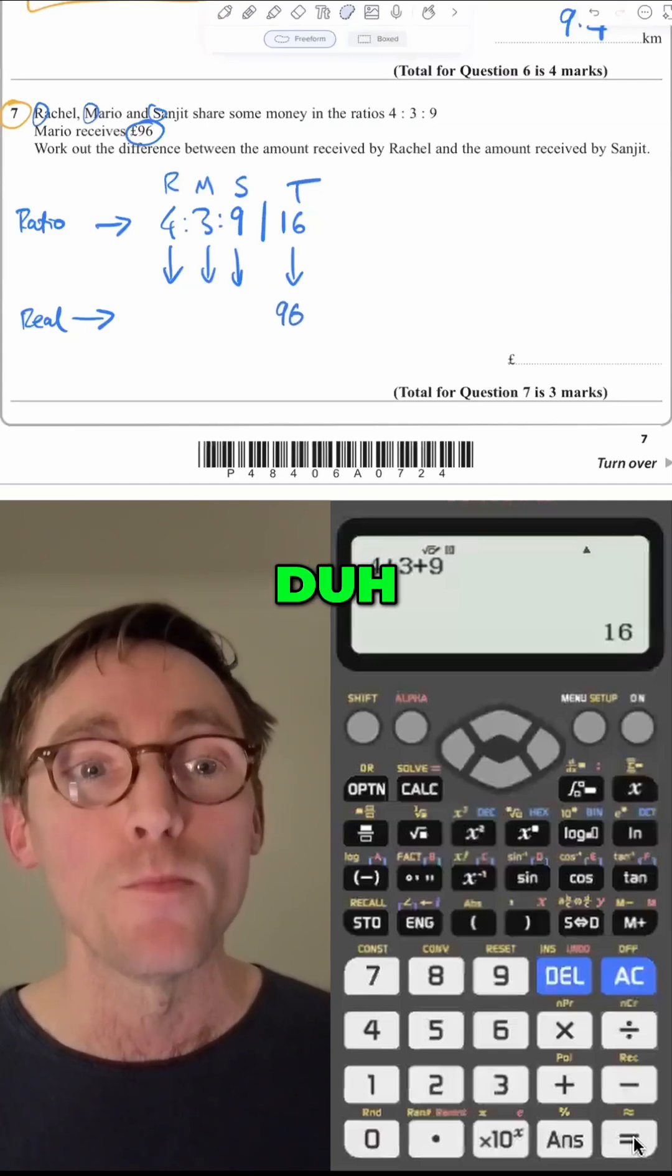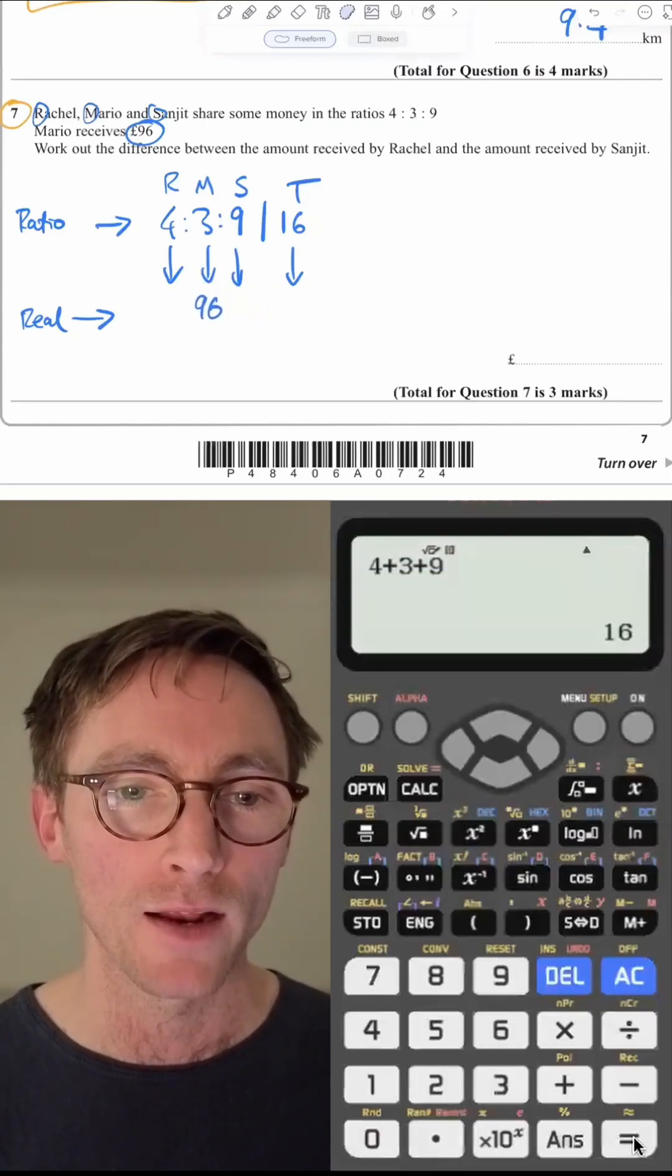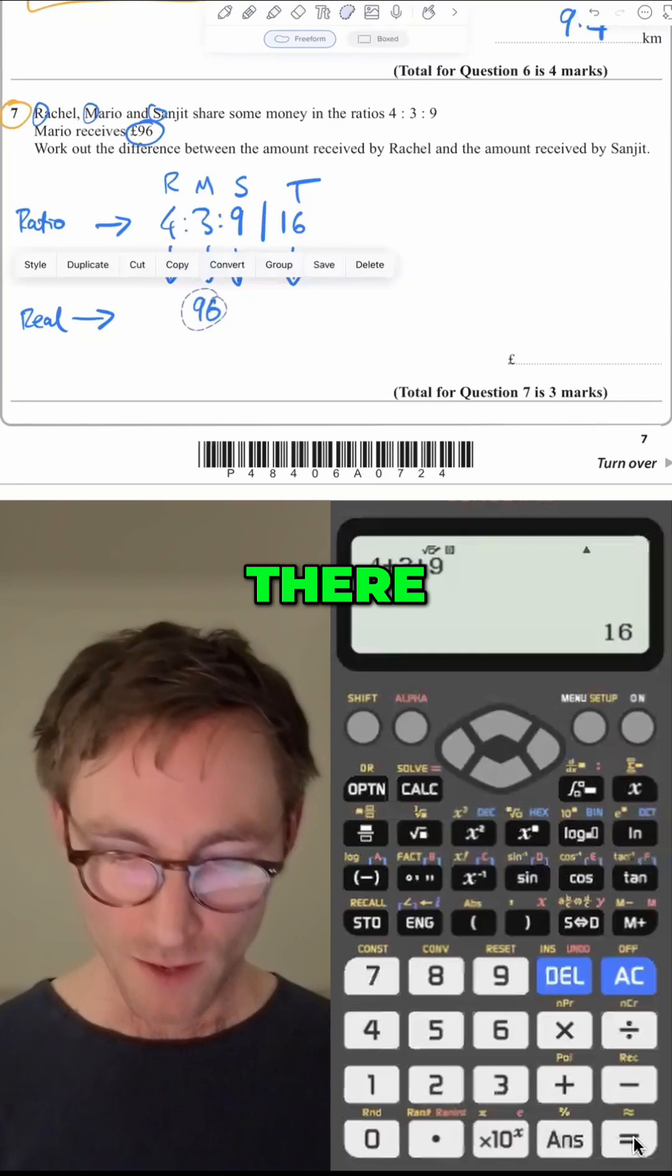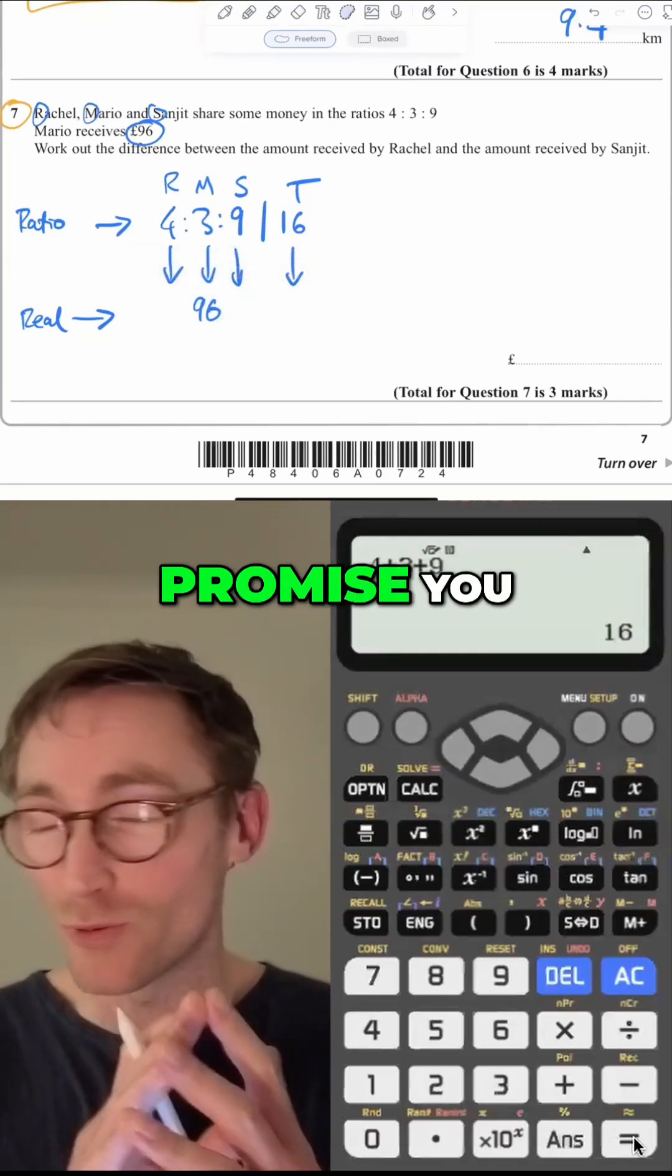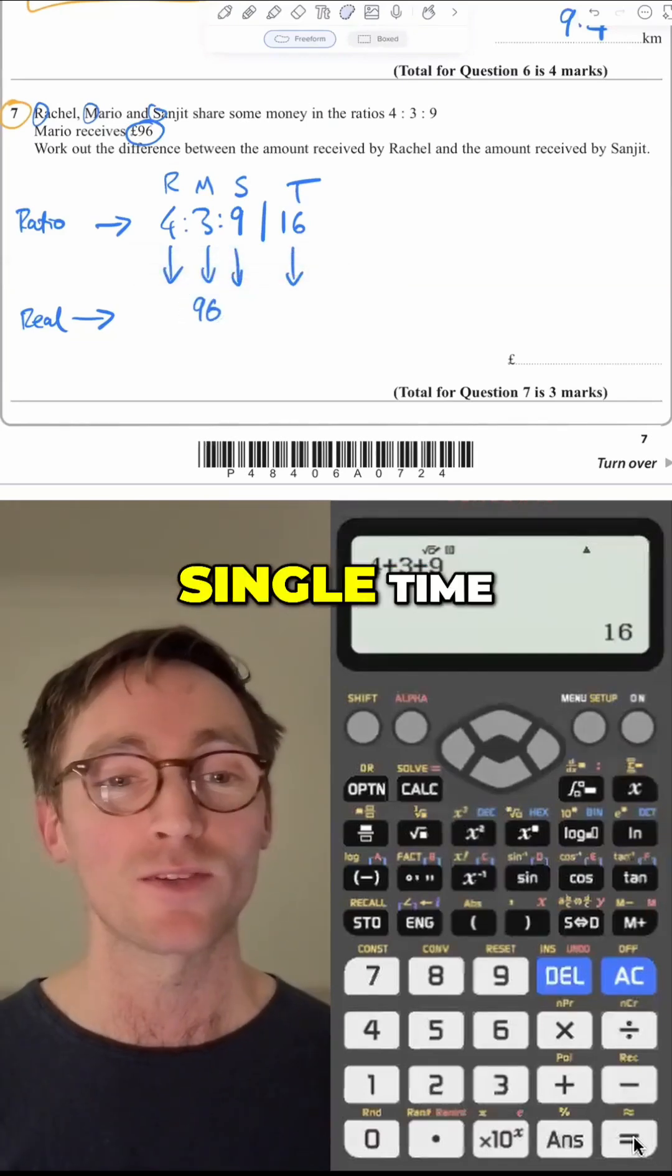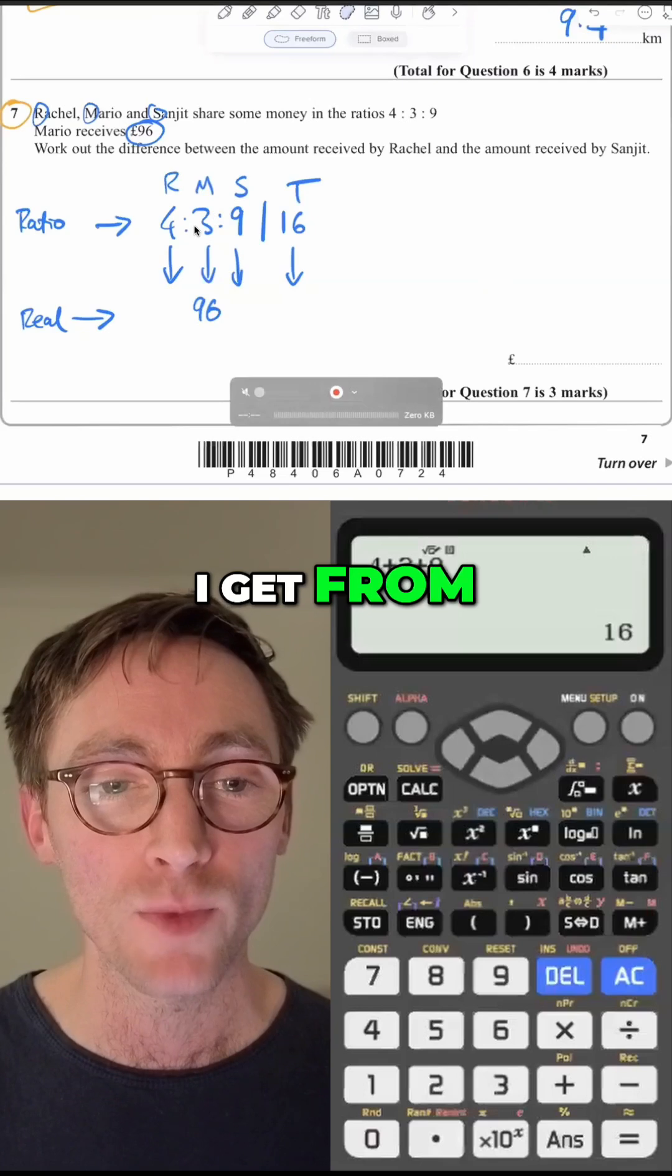Mario received 96. Okay. So it's bang, it's like that. It's under that. And then I just promise you, this is exactly the same every single time. You just need to work out how do I get from here to here.